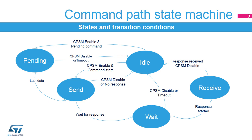When the CPSM is enabled to send a command, the command path moves to send state until the last bit of the command is sent. Then, depending on whether a response is expected or not, the CPSM can return to idle state when no response is expected, or move to a wait state and wait for a start bit on the command pin — the start of the response transmission. When a response start bit is detected within the allocated time period, the CPSM moves to receive state. After receiving the last bit of the response, the CPSM verifies the response's integrity using the received CRC, and then returns to idle state.